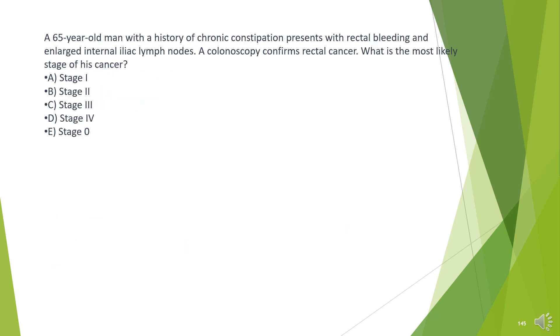A 65-year-old man with a history of chronic constipation presents with rectal bleeding and enlarged internal iliac lymph nodes. A colonoscopy confirms rectal cancer. What is the most likely stage of his cancer?